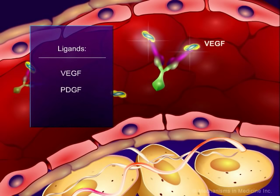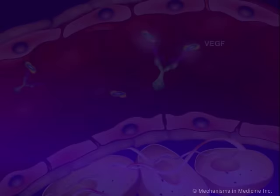Platelet-derived growth factor, or PDGF, and fibroblast growth factor, or FGF, are other examples of ligands that can be targeted for different cells in the body.